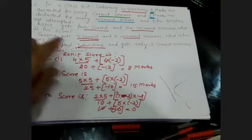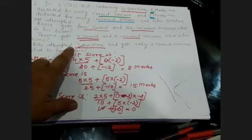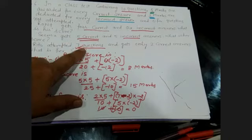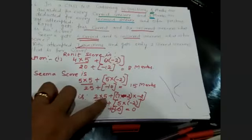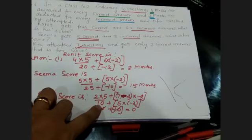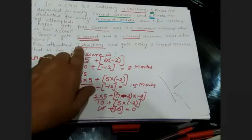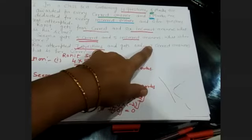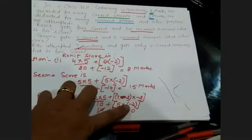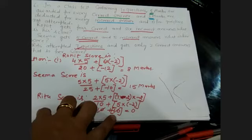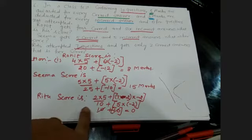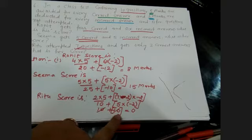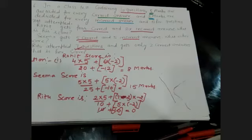And Ritu's score: she attempted 7 questions and got only 2 correct, so 2 into 5 equals 10 marks. Out of 7, with 2 correct, 5 are incorrect, so 5 into minus 2 equals minus 10. When you add 10 plus minus 10, it equals 0. This is the solution of question number 6.